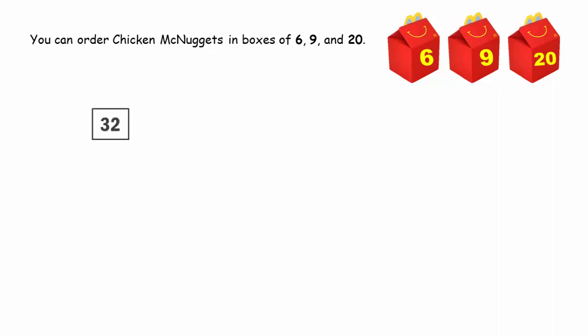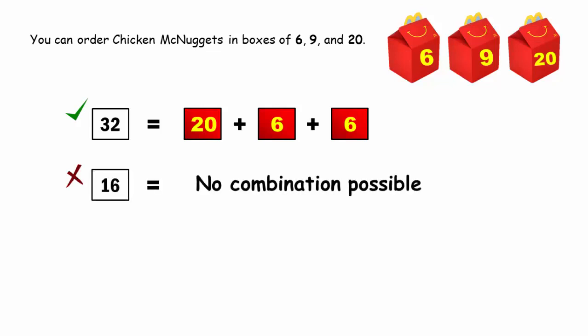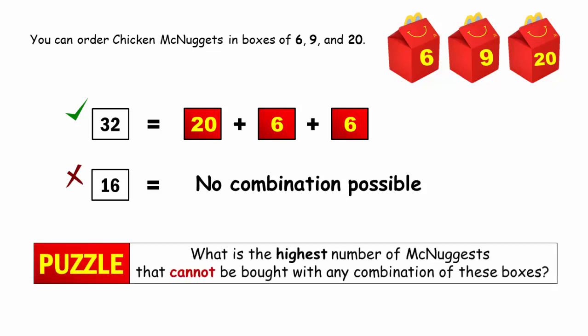For instance, if you want 32 pieces, then you can buy one box of 20 and two boxes of 6. But if you want 16 nuggets, then you won't be able to buy it with any combination. What is the highest number of McNuggets that cannot be bought with any combination of these boxes?